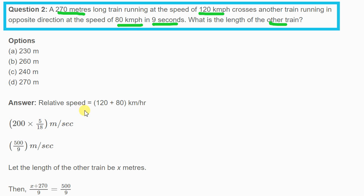The relative speed when trains are moving in opposite directions is 120 plus 80 equals 200 km per hour. Converting this to meters per second gives us 200 times 5/18 equals 500/9 meters per second.